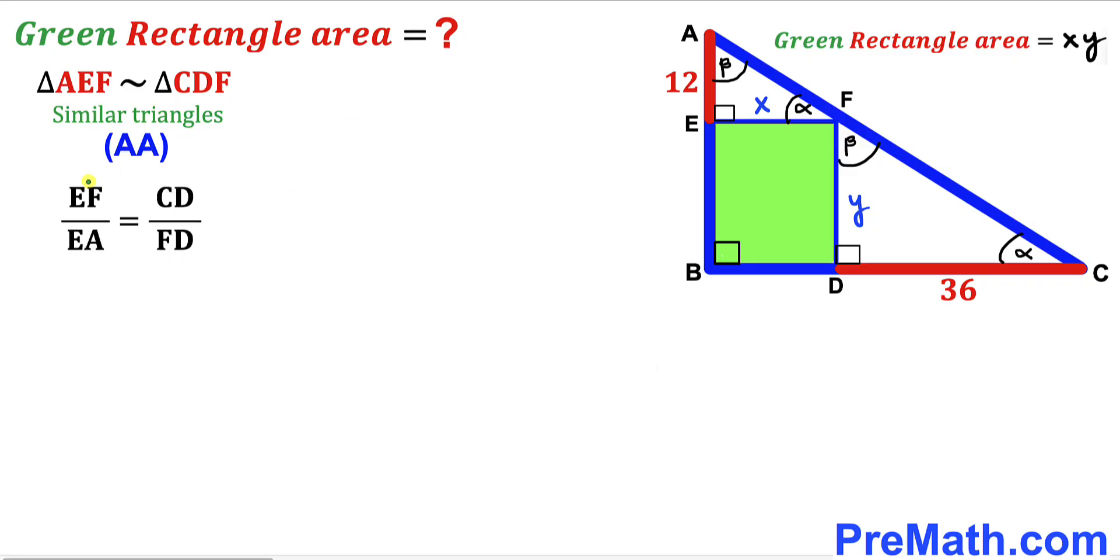In other words, the ratio of these two side lengths EF and EA is going to be equal to the ratio of the side lengths CD and FD. Our EF length is X, so I'm going to replace that with X, and our EA segment length is 12, so I'm going to replace EA with 12.